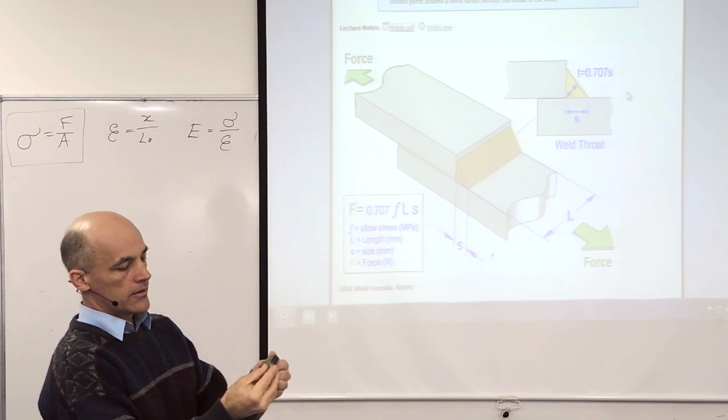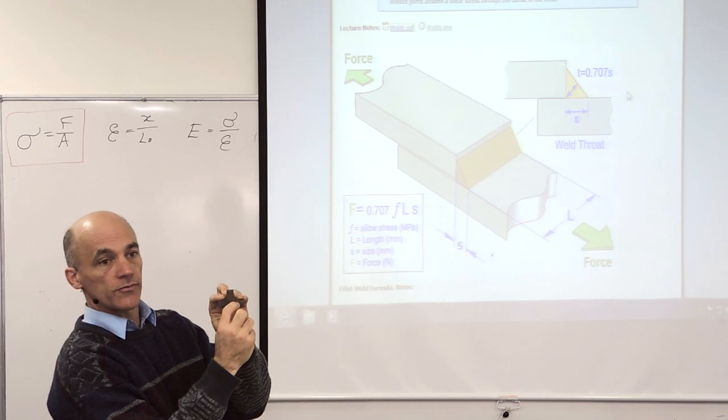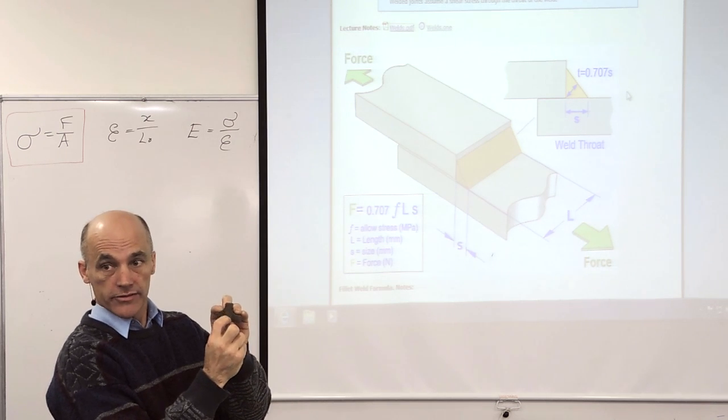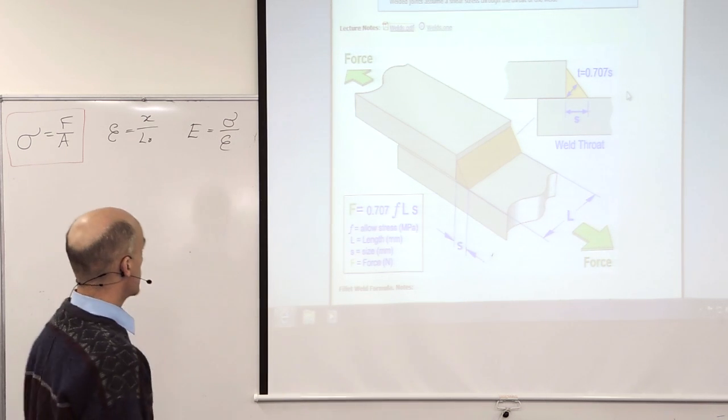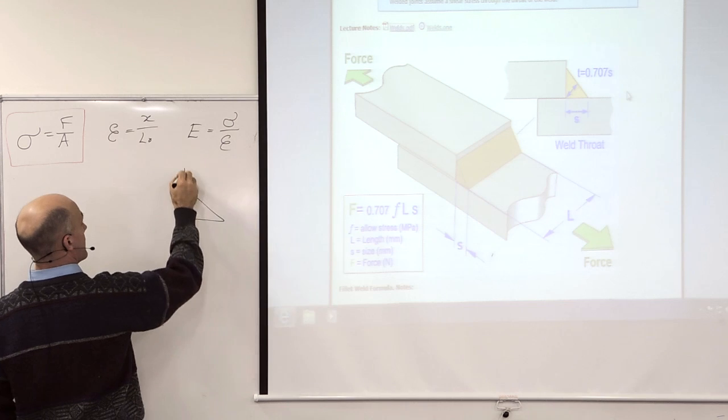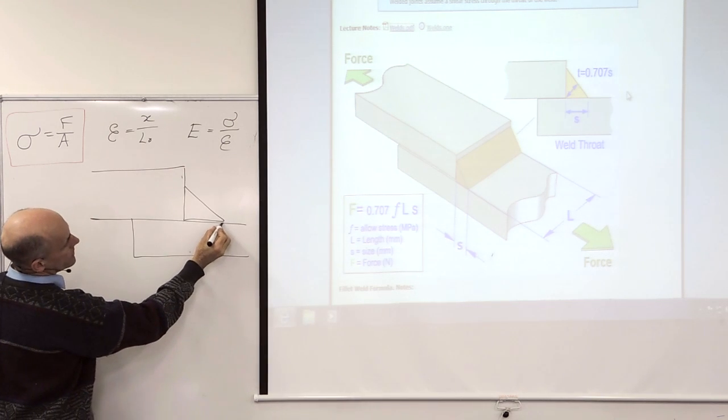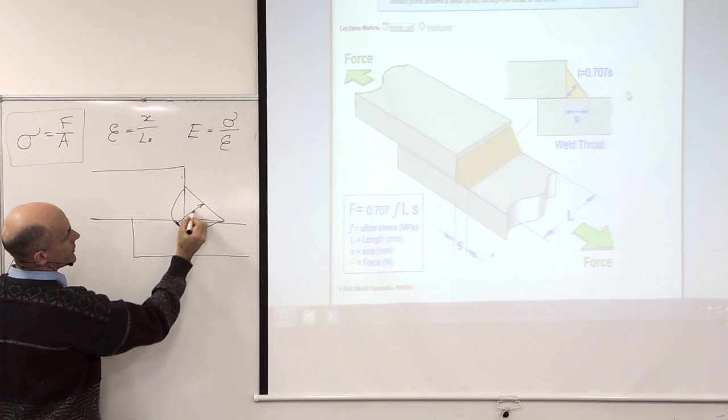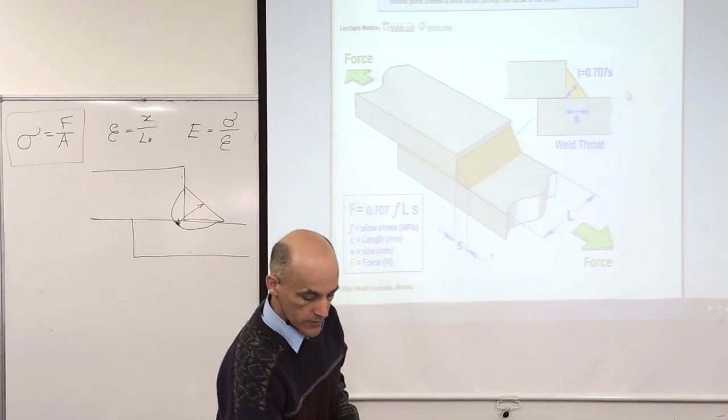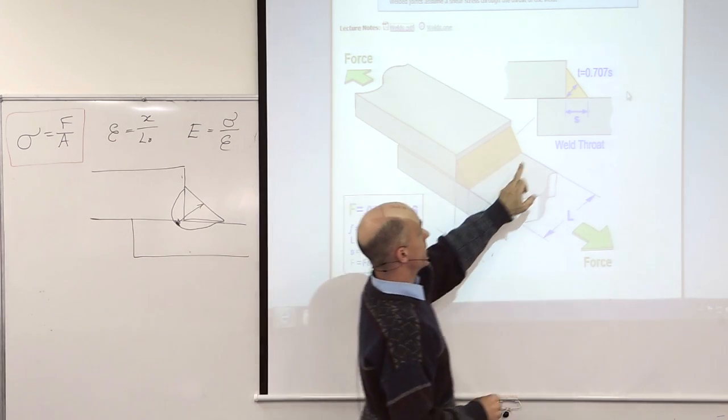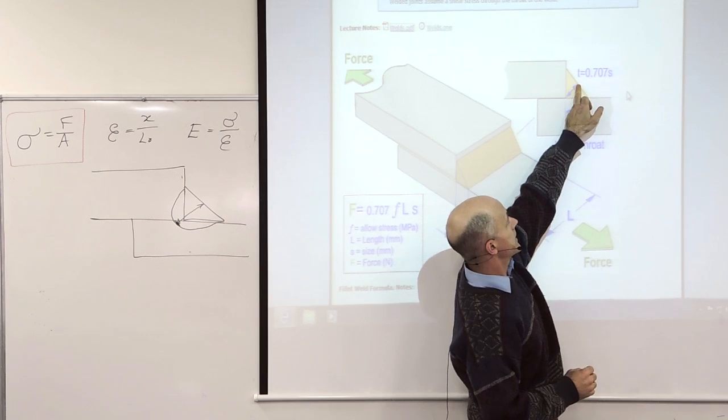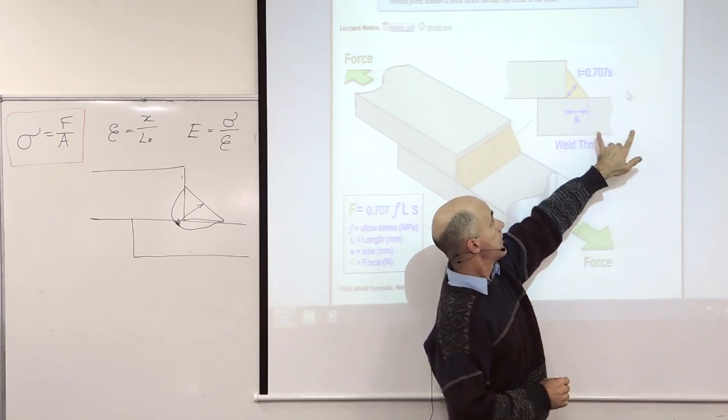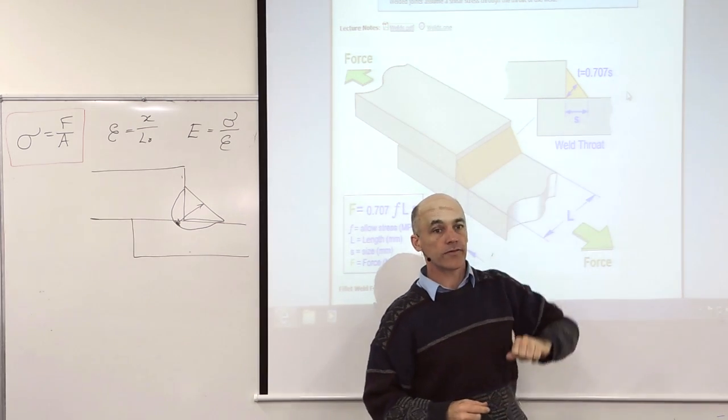So if we were to look carefully at a weld, we'd notice that the weld itself penetrates into the parent material as well. But we're not taking that into account. So the actual weld might be more like this size. And so we've really got a little bit extra. So to be on the conservative side, we're not counting any extra. We only count the throat directly from there to there, which is 0.7 of the size of the weld, using a 45 degree triangle.